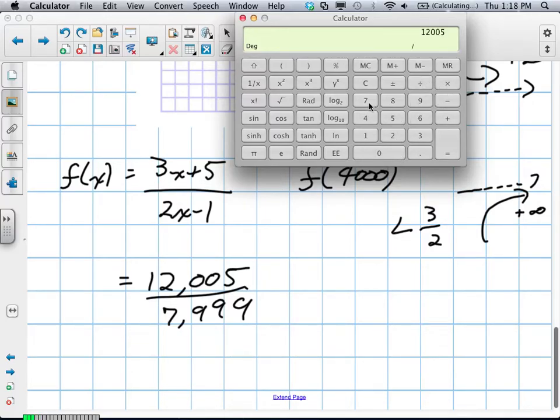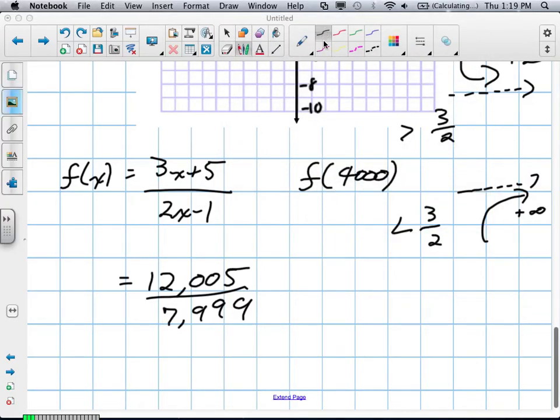Greater than 1.5. That was what's important. Because this is greater than, so this value here, f(4000), is greater than our 3 over 2.